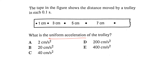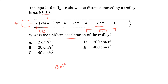In this question you need to find the uniform acceleration of the trolley. The time interval between dots is 0.1 seconds. The tape shows the car moving faster and faster — in the first 0.1 second it covers 1 cm, and towards the end it covers 7 cm in 0.1 second. We'll use the formula acceleration equals v minus u over t.